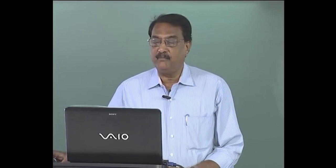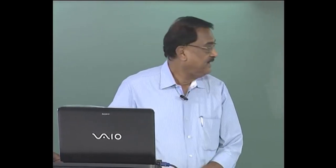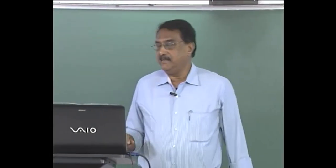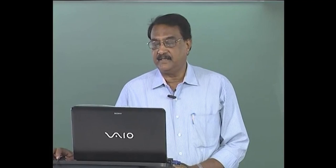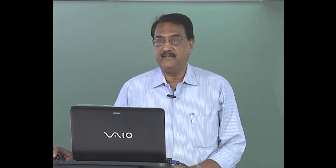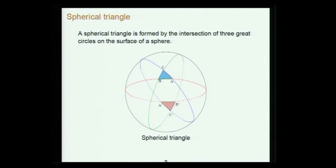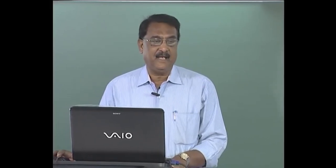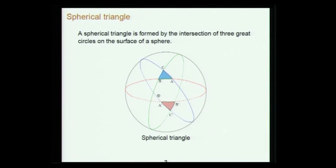A spherical triangle is formed by the intersection of three great circles on the surface of a sphere. This is one great circle passing through AC, and these are other great circles. A great circle is one whose center is the center of the sphere. There may be circles whose center is not the center of the sphere - those are called small circles. In the various relations, it is only arcs coming from great circles that are important and give useful relations.